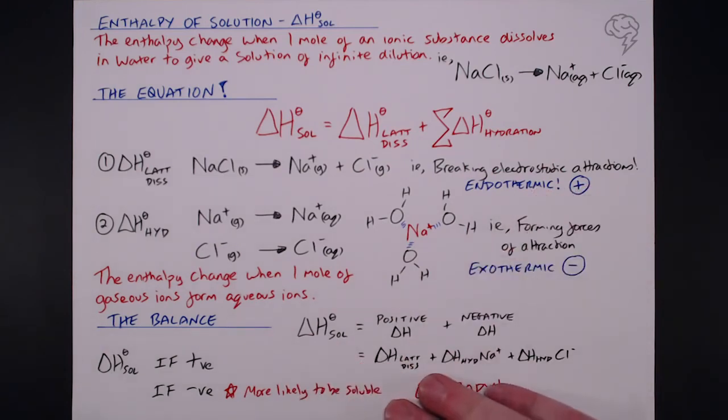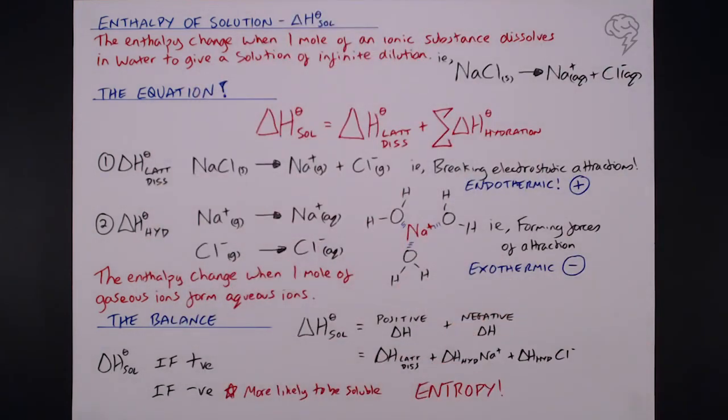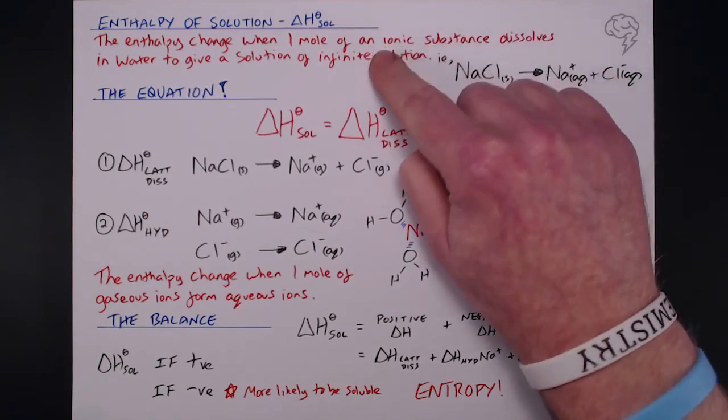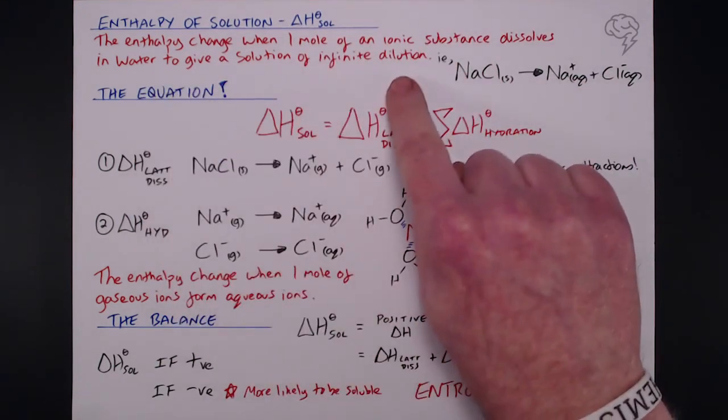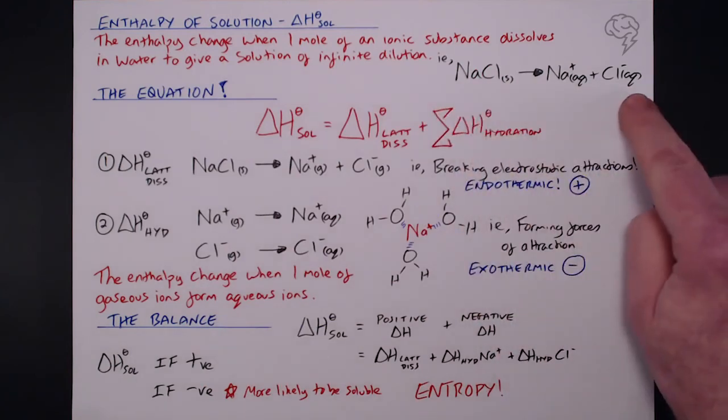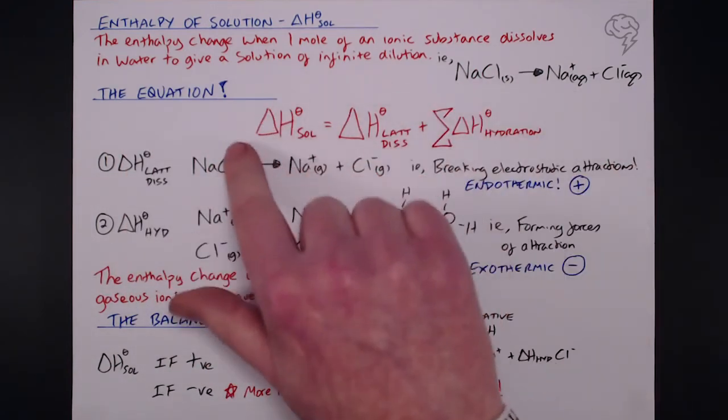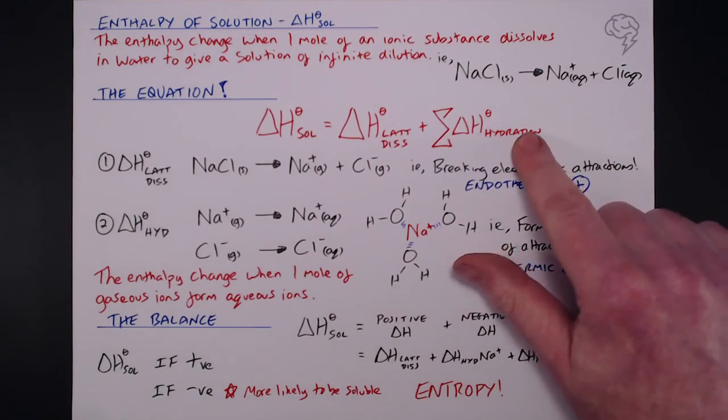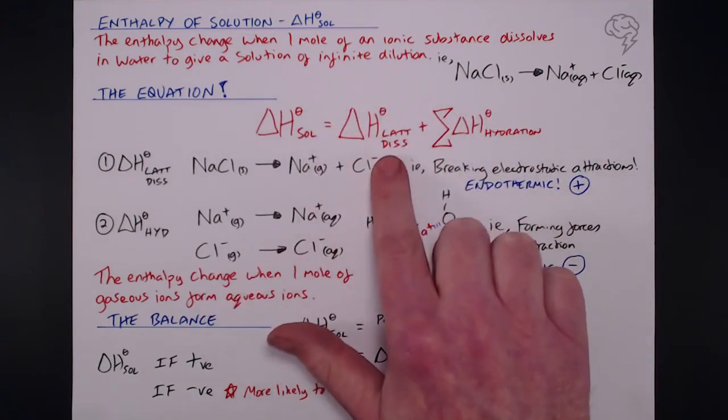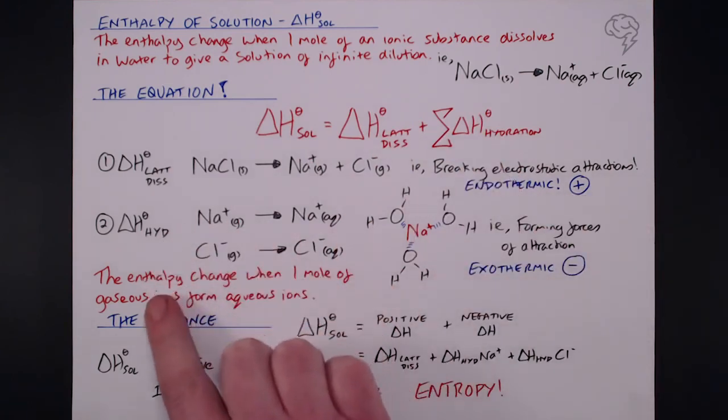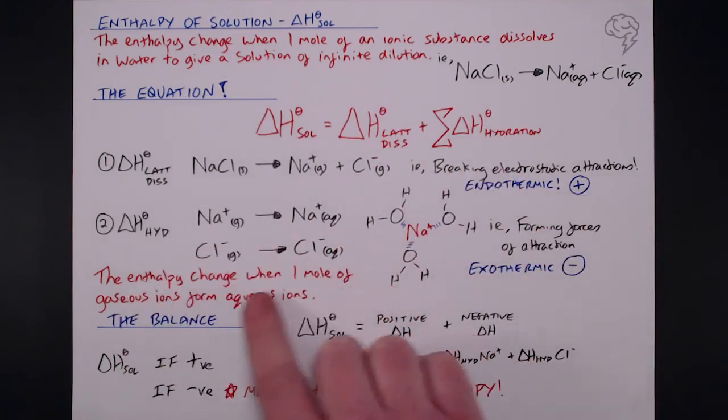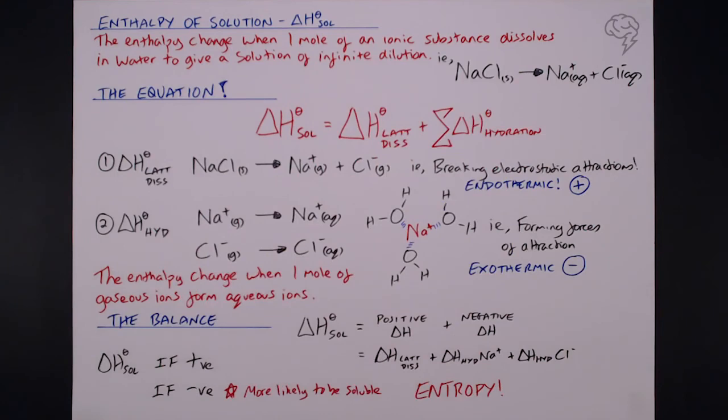So don't worry about that for now. What we're concerned about here is our definition of delta H solution. One mole, ionic substance to infinite dilution. And make sure you know this equation. Speaking of equations, this is how we calculate delta H solution. It's a balance between this, which we already know, and this new term here, delta H hydration, whereby it's the enthalpy change when one mole of gaseous ions forms aqueous ions.